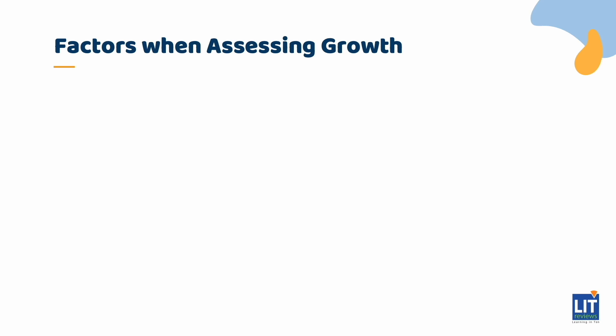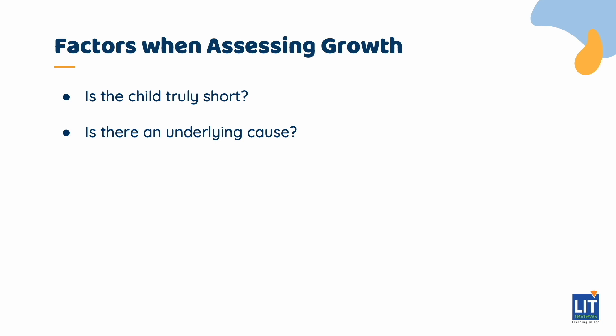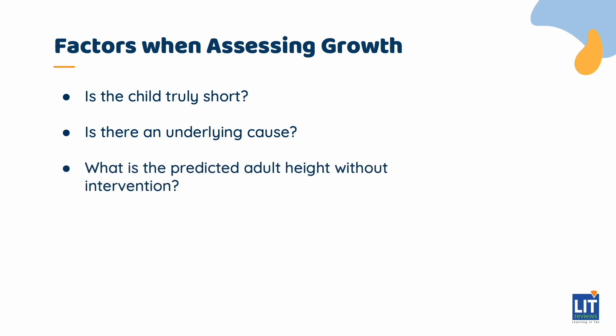When you are assessing a child's height growth, several questions need to be considered preliminarily. First, is the child truly short? How to reach the answer to this question will be discussed in due course. Secondly, is there an underlying cause? This will guide your decision on investigations as well as management. Thirdly, what will be the predicted adult height achieved without intervention? And finally, is there anything that needs to be done to improve this child's growth?